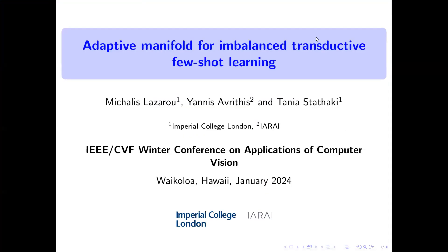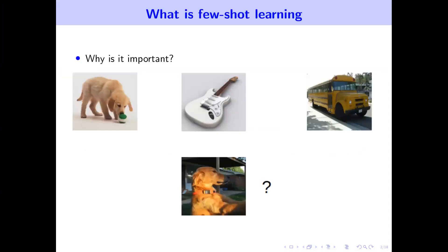Hello, everyone. My name is Michalis Lazzaro, and I am presenting our work named Adaptive Manifold for Imbalanced Transductive Few-Shot Learning. This work was a collaborative effort between researchers from Imperial College London and the Institute of Advanced Research in Artificial Intelligence in Vienna. My fellow co-authors are Yannis Avrithis and Tania Stathagy.